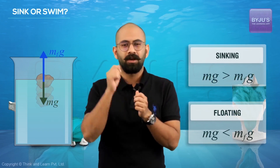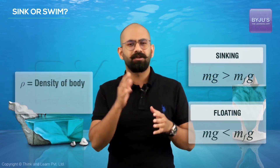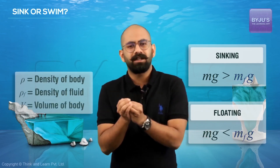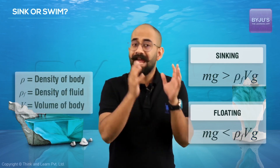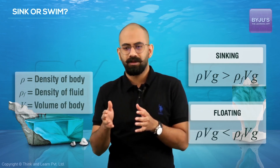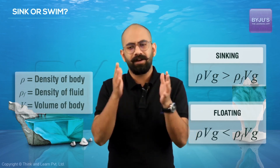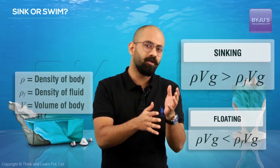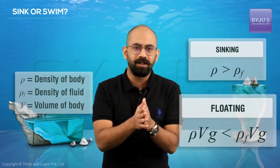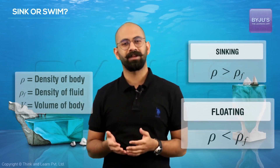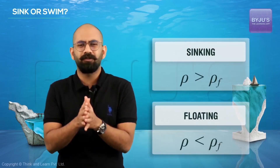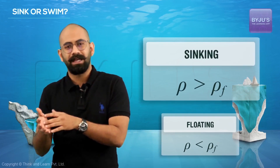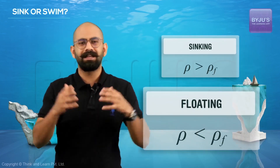If we write this in terms of densities — where rho is the density of the body, rho_F is the density of the fluid, and V is the volume of the body — then MfG equals rho_F × V × G. Substituting into our equations: for sinking, rho × V × G should be greater than rho_F × V × G, which means rho must be greater than rho_F. For floating, rho must be less than rho_F. So whether something sinks or floats depends only on its density relative to the fluid.